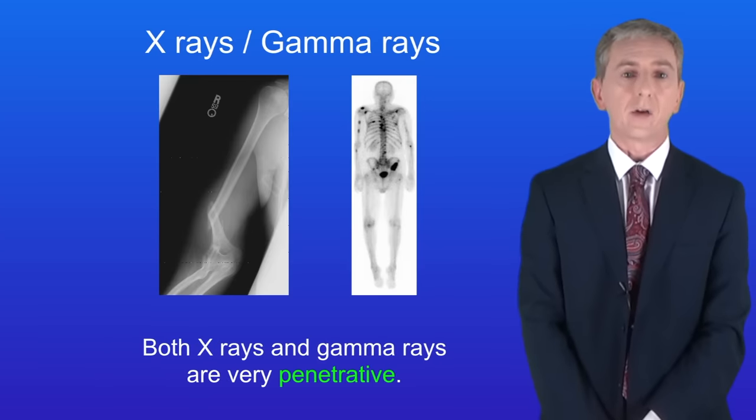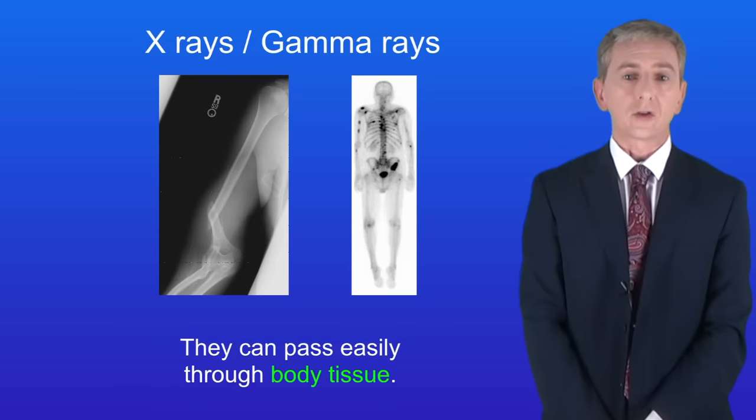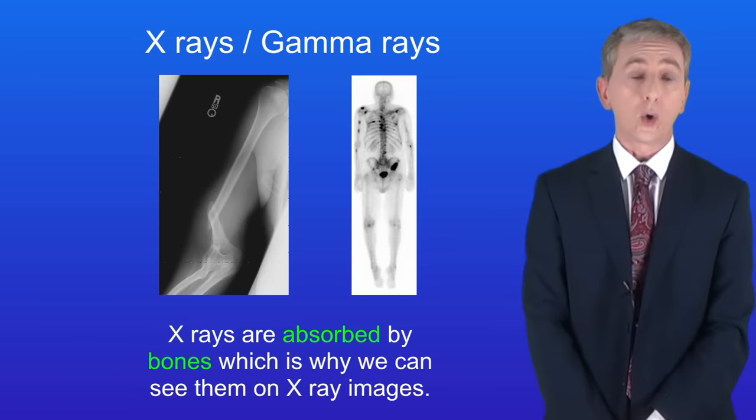Both x-rays and gamma rays are very penetrative. In other words they can pass easily through body tissue. However x-rays are absorbed by bones which is why we can see them on x-ray images.